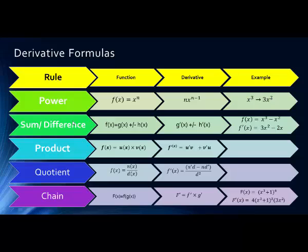The second rule is the Sum and Difference Rule. This is when a function is made up of a sum or difference of two other functions — a perfect example is our polynomials. We take the derivative of each piece and then add or subtract them, whatever is happening in the original function. In our example, x cubed minus x squared: the derivative of x cubed is 3x squared, the derivative of x squared is 2x, so f'(x) = 3x squared minus 2x.